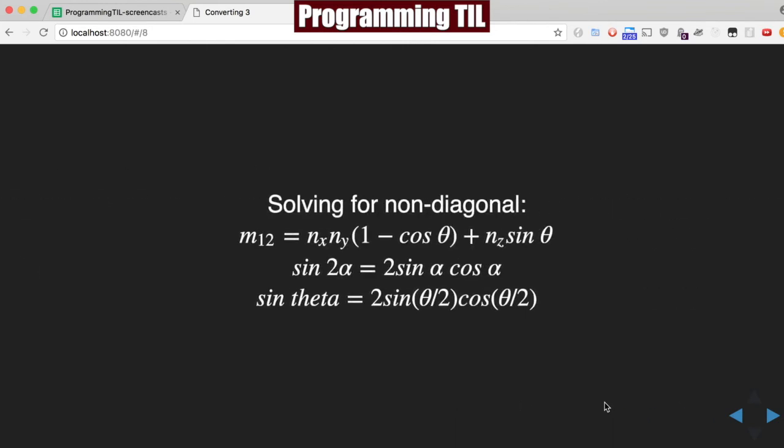To solve for the non-diagonal, we're going to be doing the same thing. We're going to be using this trig identity here: sine 2 alpha equals 2 sine alpha cosine alpha, and then sine of theta here.